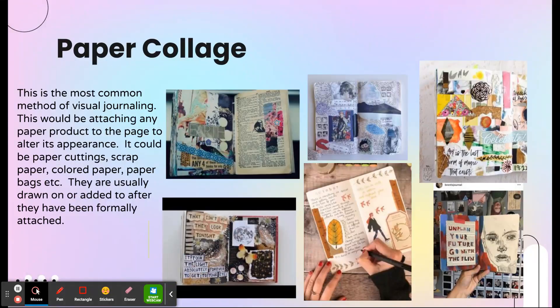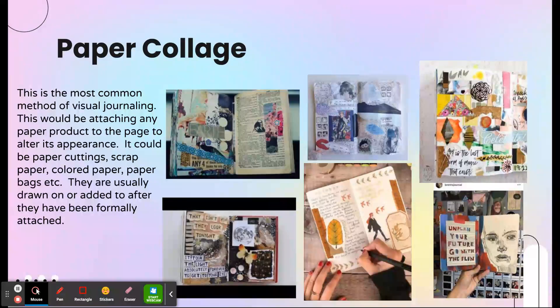Another thing is paper collage. A lot of visual journaling involves including many layers, and paper is a good method of creating a solid background that you can layer on top of. You can use colored paper, fabric collage, old books you can rip up, old magazines — just to create a foundational layer, something you can build off of later. This method creates a really unique effect and goes with the visual journaling aspect because it includes words too.